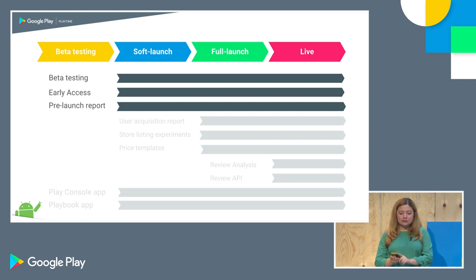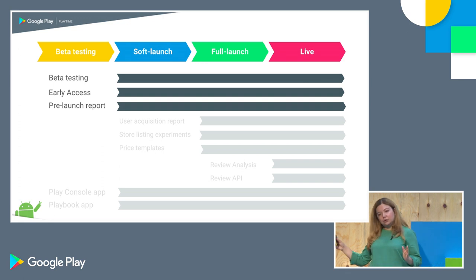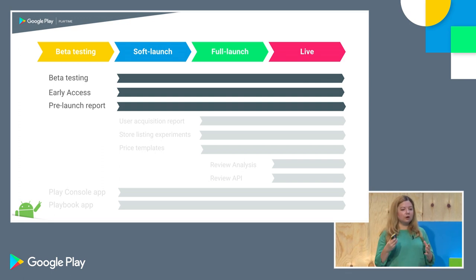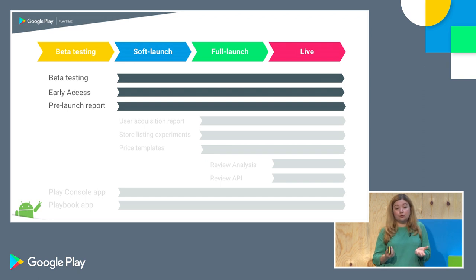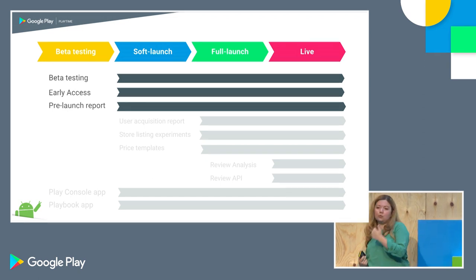The pre-launch report, like beta testing and Early Access, is useful all throughout your launch lifecycle. It's never too early to start getting this feedback. You want to use it as you're launching and once your app is live.